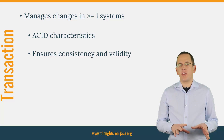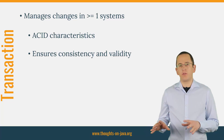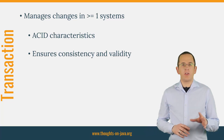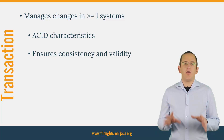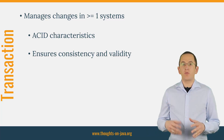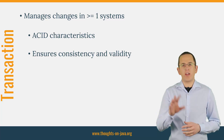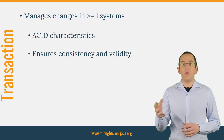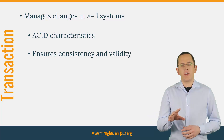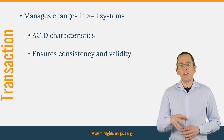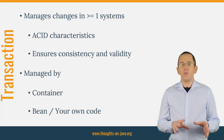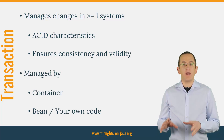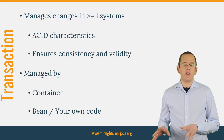Transactions manage the changes that you perform in one or more systems. These can be databases, message brokers, or any other kind of software system. The main goal of a transaction is to provide ACID characteristics. That's an acronym that I will explain in more detail on the next slide. These characteristics help you to ensure the consistency and validity of your data. All modern application stacks make managing transactions extremely easy by implementing the JTA specification.